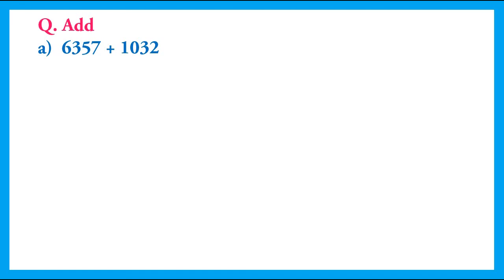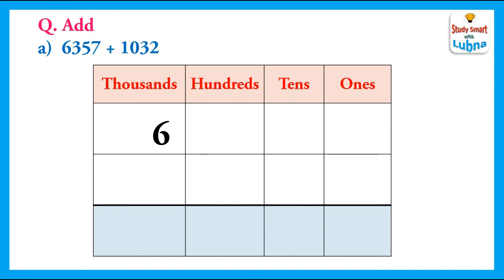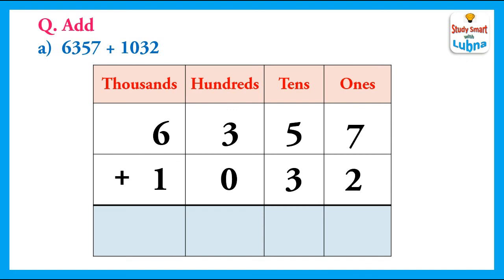One more question. Here, we have to add 6357 and 1032. We will write these 4-digit numbers below their place values: 6357 and 1032. We will add them. We will add the ones. 7 plus 2 equal to 9. We write 9 in the ones column. We will add the tens. 5 plus 3 equal to 8. We write 8 in the tens column. Next step, we will add the hundreds. 3 plus 0 equal to 3. We will write 3 in the hundreds column.